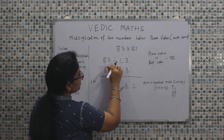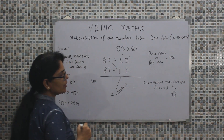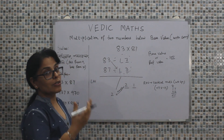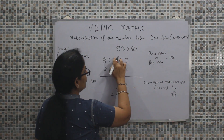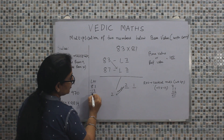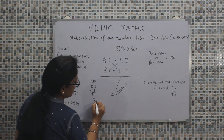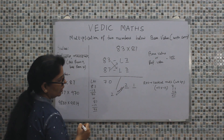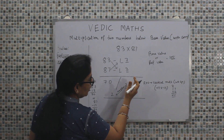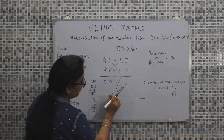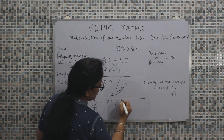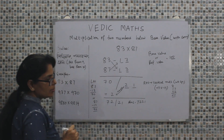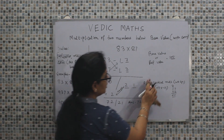Proceeding for the LHS calculation — for LHS, we have diagonal addition or subtraction. If the number is minus, we subtract; if plus, we add. So that will be 87 minus 13, which is 70. And 87 minus 17 also comes out to be 70. So our LHS is 70. The overflow from the right-hand side — that is 2 — will be added to the LHS: 70 plus 2 gives 72. So the LHS is 72 and the RHS is 21. Our final answer is 7221.